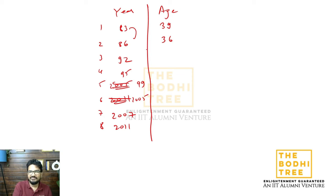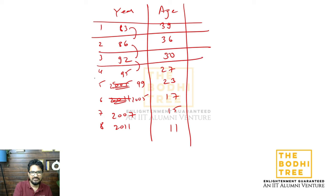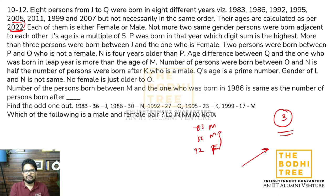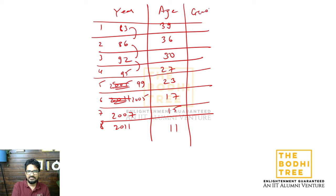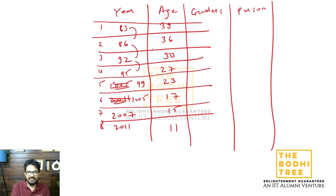2022 minus 86 = 36, 2022 minus 92 = 30, jo 3 se chota hai 27, 4 se 30, phir 17, phir 15, aur 11. Ab unhone hints di hain. Genders bhi apne paas likh lete hain aur phir person aa jayega. J's age is a multiple of 5 - multiple of 5 kaun sa hai? Matlab J aa sakta hai yahan par - do hi possibilities hain.